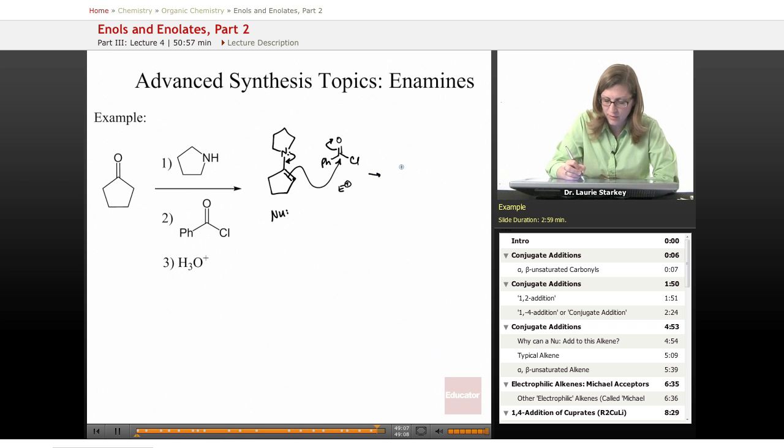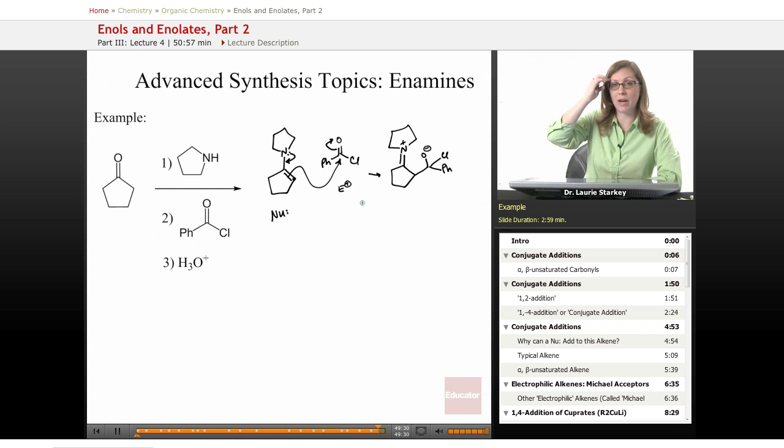Remember, every time we attack a carbonyl, we break the pi bond. Okay, that brings us to this complex structure here. And we have an acid chloride that we're reacting with. So what happens when we break that pi bond to the carbonyl? This intermediate is not very stable.